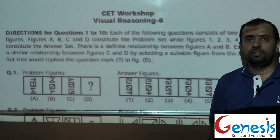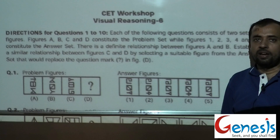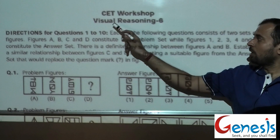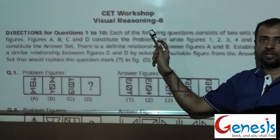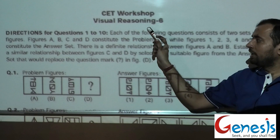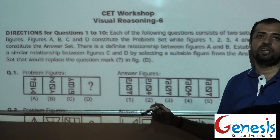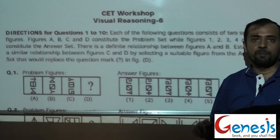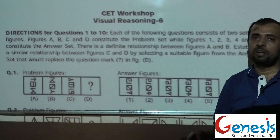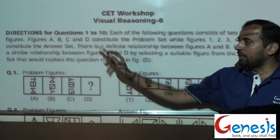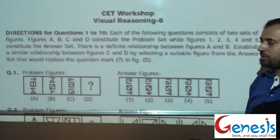Hello friends, welcome back. I am Sandeep Kaushik from Genesis Mentors Pune. In this video I would be talking about CET Workshop Visual Reasoning 6, which is the last workshop for visual reasoning. Here we are going to talk about 10 more questions which are based on analogies, completing our set of visual reasoning questions: series completion, odd man out, and analogies. The directions are the same as the previous video, so let us quickly move on to question number 1.